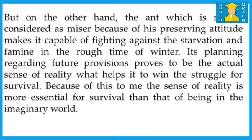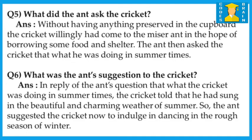Question number five: What did the ant ask the cricket? Answer: Without having anything preserved, the cricket came to the ant hoping to borrow food and shelter. The ant asked the cricket what it was doing in summer times. Question number six: What was the ant's suggestion to the cricket? Answer: The cricket told the ant it had sung in the beautiful and charming weather of summer, so the ant suggested the cricket to now indulge in dancing in the rough season of winter.